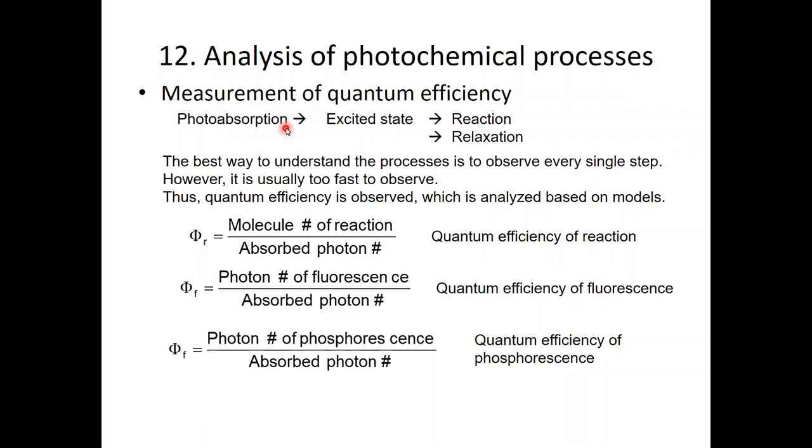During the photochemical reaction, first photoabsorption happens in the excited state, then via the excited state chemical reaction or loss of energy or relaxation happens for chemical systems. The best way to understand these processes is just look at these processes. If you could see the chemical reaction by your eyes, no need to do analysis.